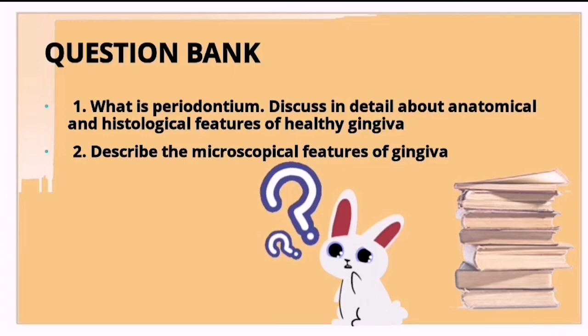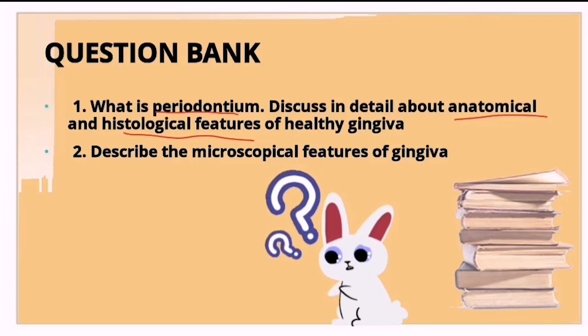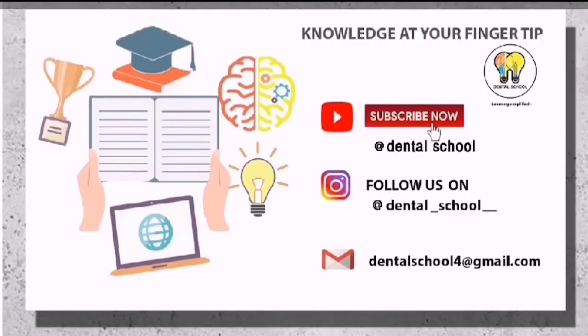Previous year questions have asked about the definition of periodontium and its four parts — gingiva, cementum, periodontal ligament, and alveolar bone — as well as the macroscopic and microscopic features of gingiva covered in this video. If you found this video informative, please like, share, comment, and subscribe. For queries, DM on Instagram or email dentalschool4@gmail.com.